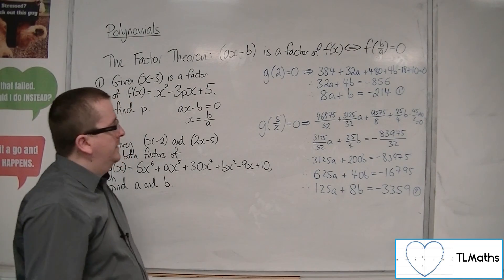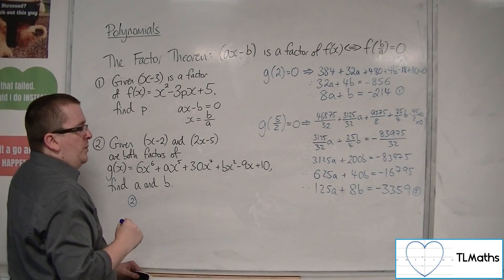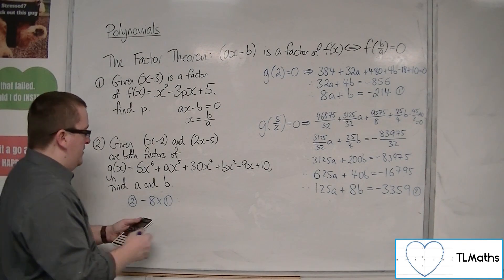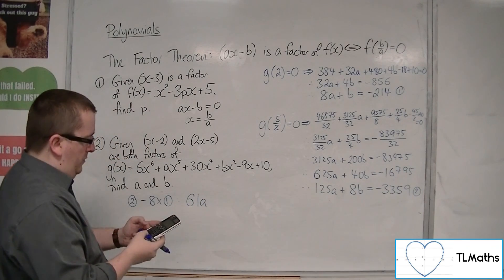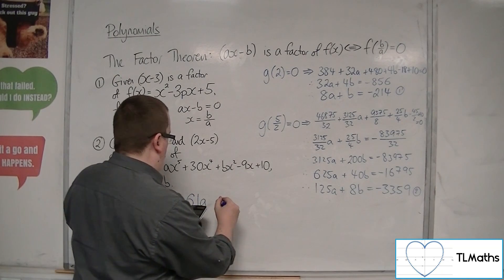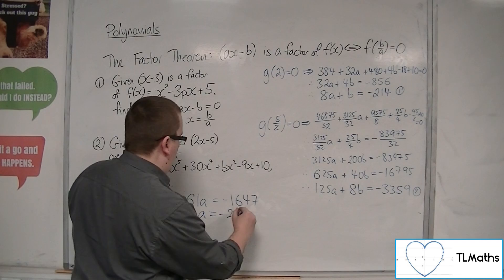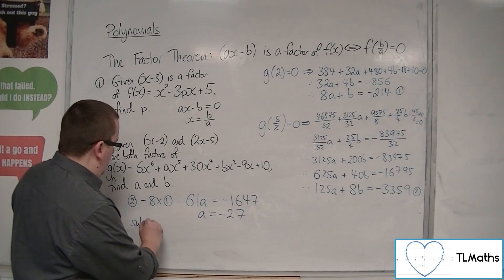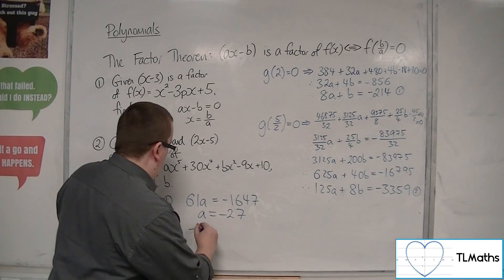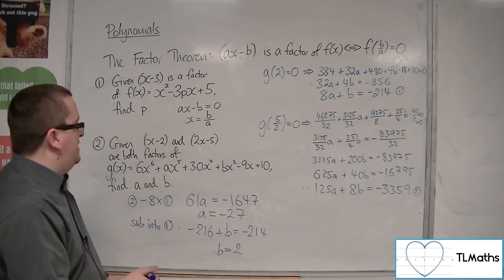Now to eliminate the b's, doing equation 2 take away 8 lots of equation 1: 125 minus 8 lots of 8 gives 61, so 61a. The b's cancel. Minus 3359 take away 8 lots of minus 214 is minus 1647. Dividing by 61 gives a equals minus 27. Substituting back into equation 1: 8 times minus 27 is minus 216, plus b equals minus 214, so b equals 2.